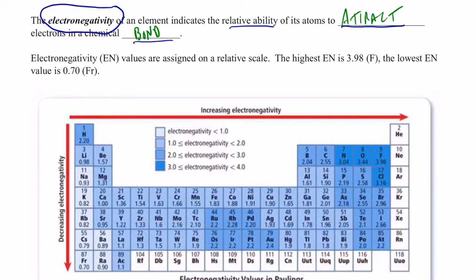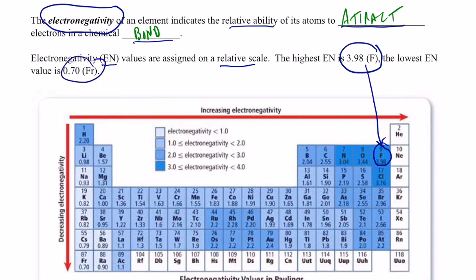If an atom is really good at attracting electrons to itself, we say it has a high electronegativity. If it's not very good at attracting electrons to itself, we say it has a low electronegativity. Electronegativity values, which we abbreviate EN, are assigned on a relative scale. The highest is 3.98, which is the electronegativity of fluorine.